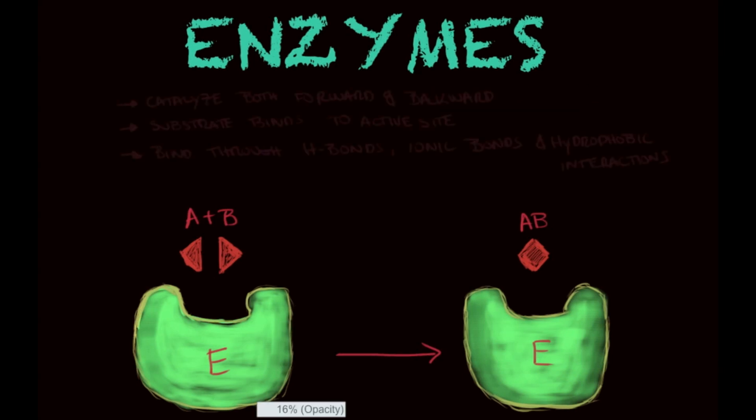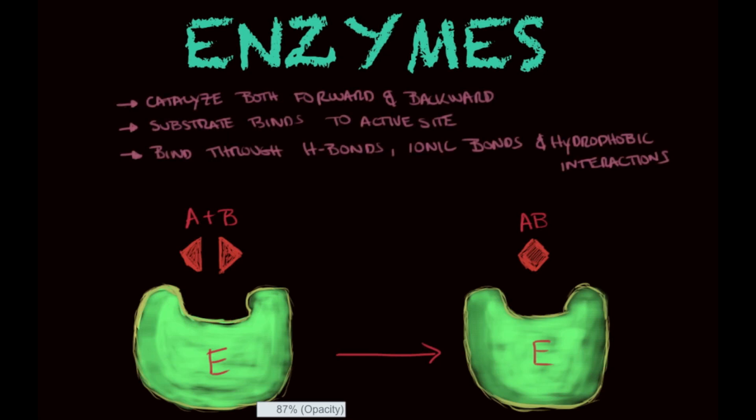So substrate is going to be the reactants, the name attributed to reactants when we talk about enzymes. So there are still a few characteristics that I would like to go over before we move into a little bit more detail on enzymes, how they work. Now, the first characteristic is that enzymes catalyze reactions both forward and backward.